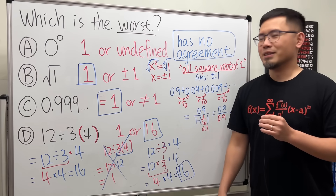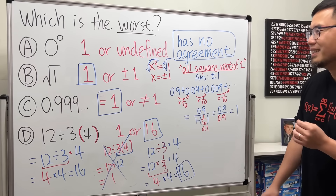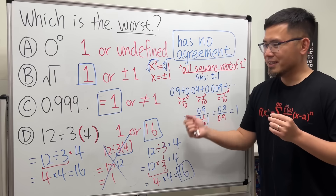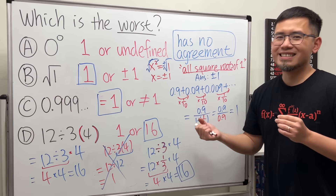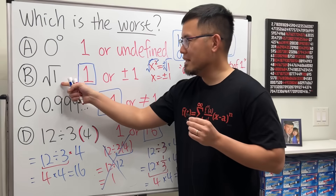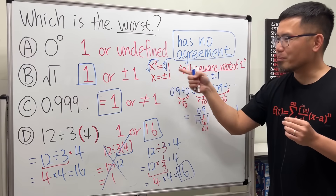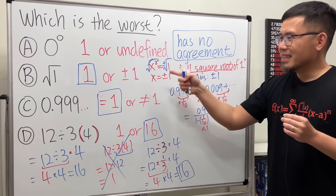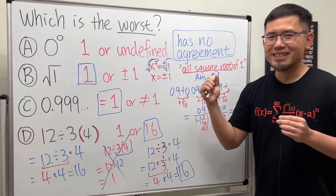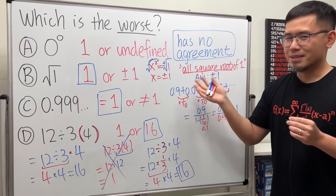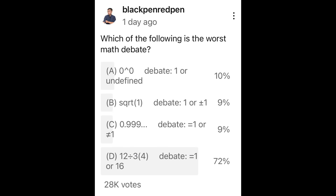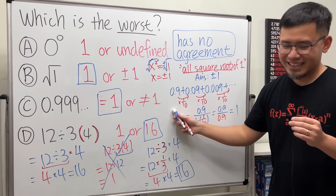Going back to the main question — which of these is the worst? I personally would go for B, the square root one. But about 70 percent of you voted for D, the order of operations problem.